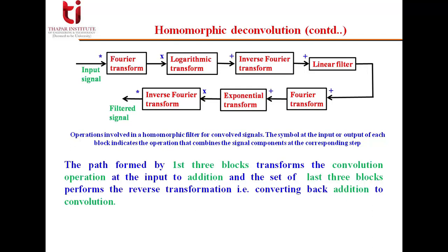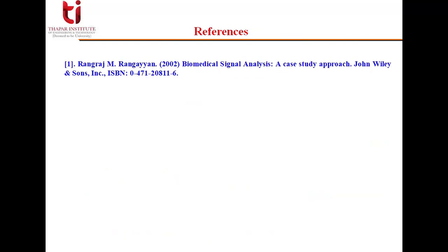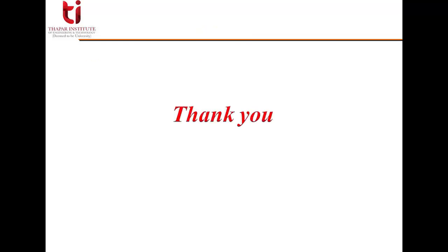The first three blocks transform the convolution operation at the input into addition. The last three blocks perform the reverse transformation — converting addition back to convolution — with the linear filter in between. The filter therefore operates on transformed signals that are combined by simple addition. This concludes the lecture. The reference for this material is the Rangaraj M. Rangayyan book.